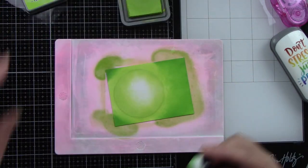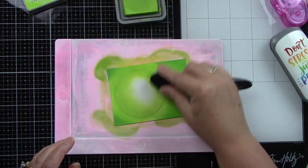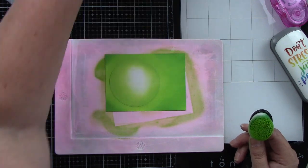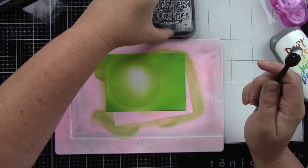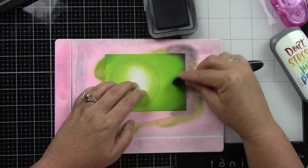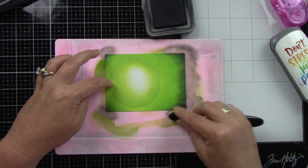This is in Distress Oxide inks. I'm just going to go back and forth to get a really good blend, making sure each color flows nicely into one another. I'm also using a mini stencil mat from Waffle Flower.